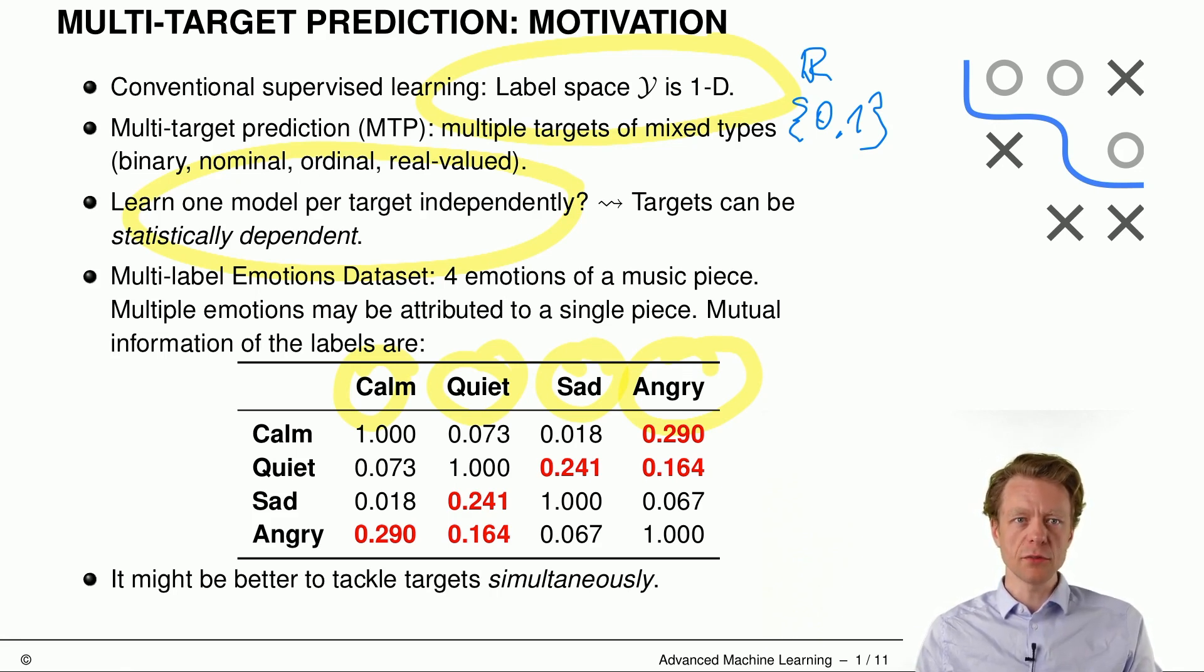And as you can see here, the mutual information of the labels, for example, sad and angry, sorry, angry and calm here in that case are somehow related, and quiet and sad are also somehow related in this data set, which means that perhaps there might be a better thing, it might be a better thing to tackle these targets simultaneously.